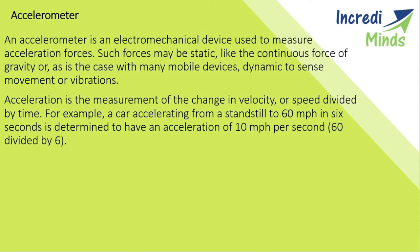The Arduino reads the acceleration from the sensor and then calculates the pitch and roll values using functions provided by the MPU6050 library. These pitch and roll values are shown on the serial monitor with the help of the code. Whenever we move the sensor, the pitch and roll values on the serial monitor will change according to the movement.